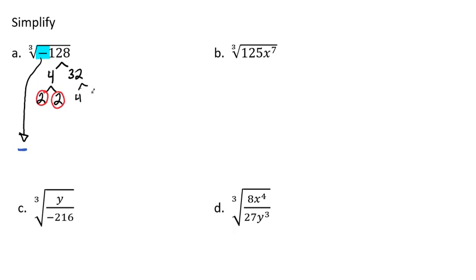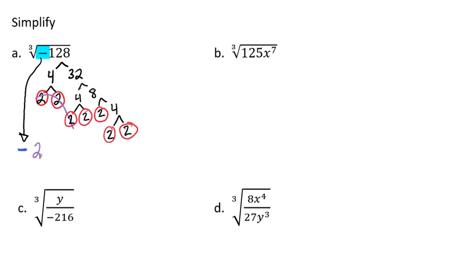32 breaks down to a 4 and an 8. 4 breaks down to 2 and 2. 8 breaks down to a 2 and a 4. Notice that I'm circling my prime numbers each time. In this case, they all happen to be 2s. Now we're looking for 3 of a kind. I see 3 twos here — I'll bring one 2 out. Another group of 3 twos — I'll bring that 2 out. But there's a lone 2 left, so that 2 is going to stay inside the radical as a cubed root of 2.